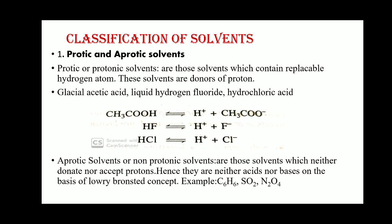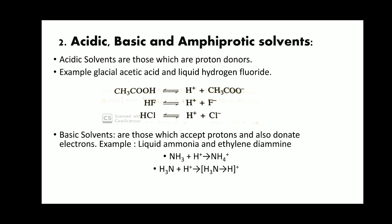Aprotic solvents, or non-protonic solvents, are those solvents which neither donate nor accept protons. Hence they are neither acids nor bases on the basis of the Brønsted-Lowry concept. For example: benzene (C₆H₆), sulfur dioxide, dinitrogen tetroxide (N₂O₄), acetonitrile, and CCl₄ are examples of aprotic solvents because they can neither donate nor accept protons.